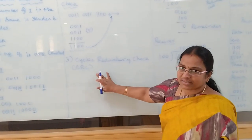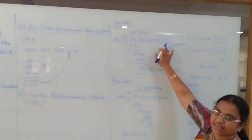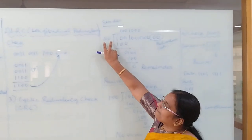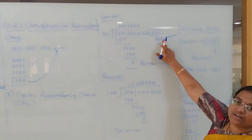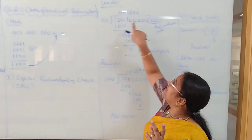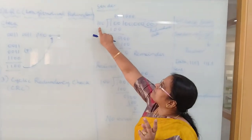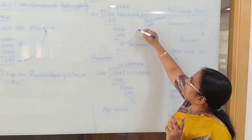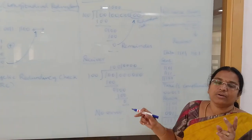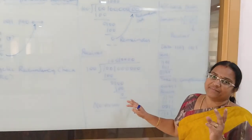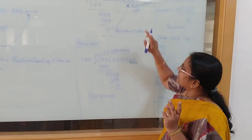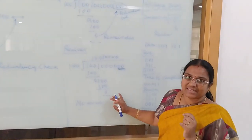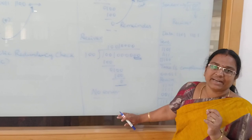The third method is cyclic redundancy check, that is CRC. Here we have the sender data and a divisor. We append redundant zeros — two zeros in this case, which is one less than the number of bits in the divisor. We divide the data and get a remainder. This remainder is added as the redundant code and sent to the receiver. On the receiver side, the data along with the redundant code is divided again. If the remainder is zero, no error has occurred.